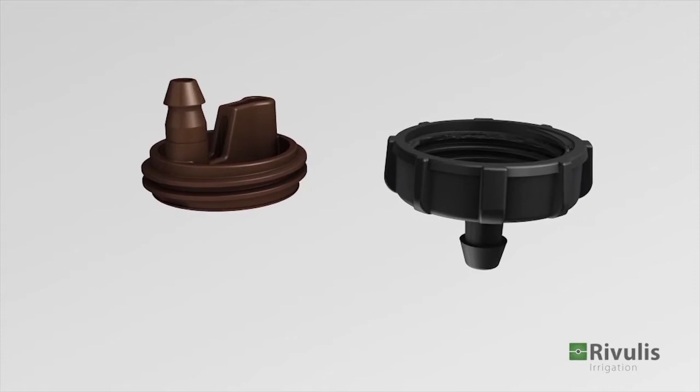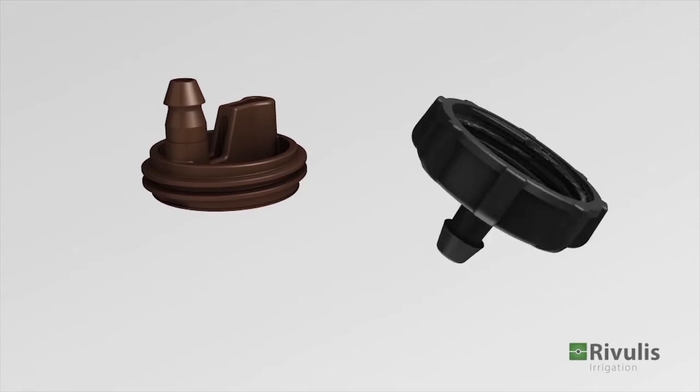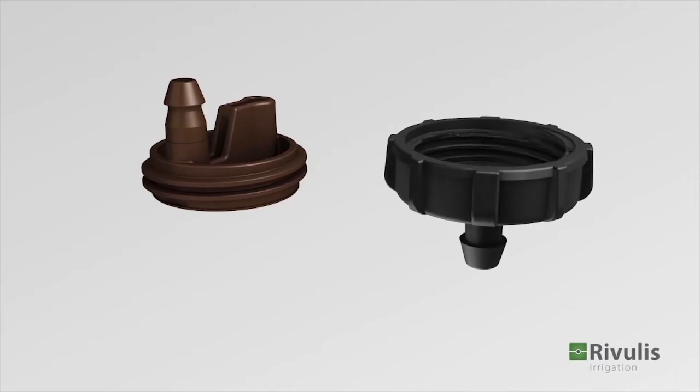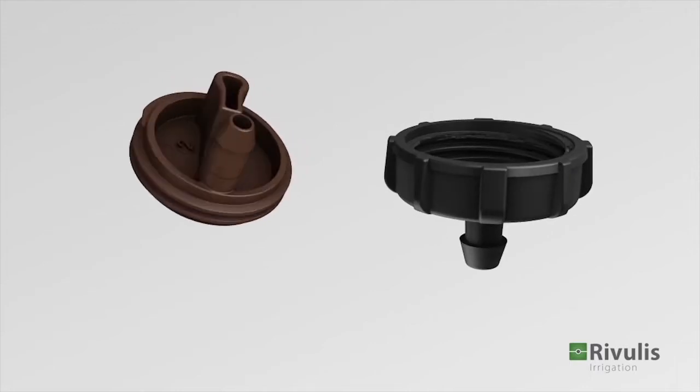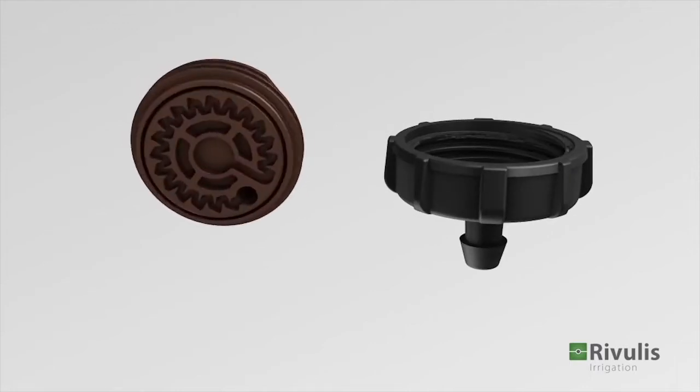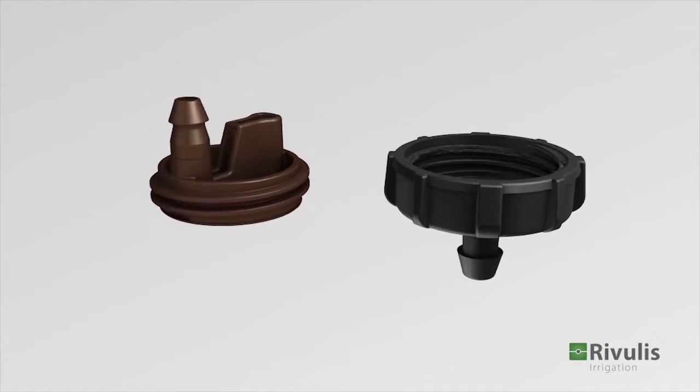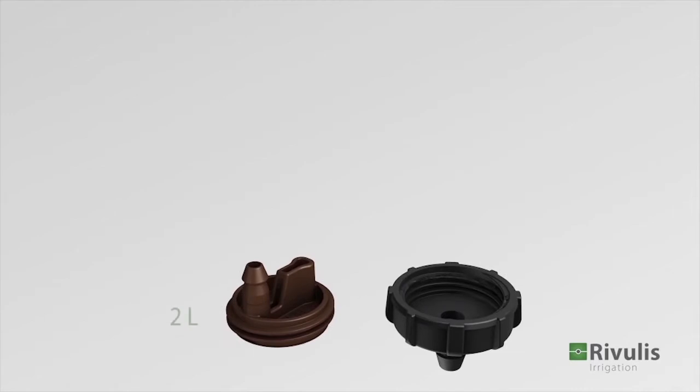e1000 is an online dripper for orchards, greenhouses, and nurseries. It consists of a body and a threaded cover.